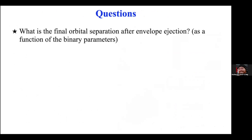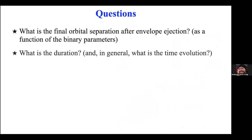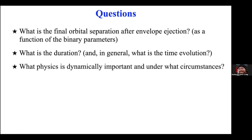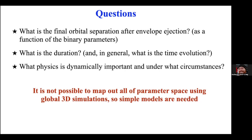Some key questions about this phenomenon: What is the final orbital separation after envelope ejection as a function of binary parameters? What is the duration of the common envelope stage — does it last 1,000 years or one year? Observationally there are no very firm constraints on the timescale. We want to map out the time evolution of the process and understand what physics is dynamically important. It's not possible to map out all the parameter space using global 3D simulations, so we need simpler models.